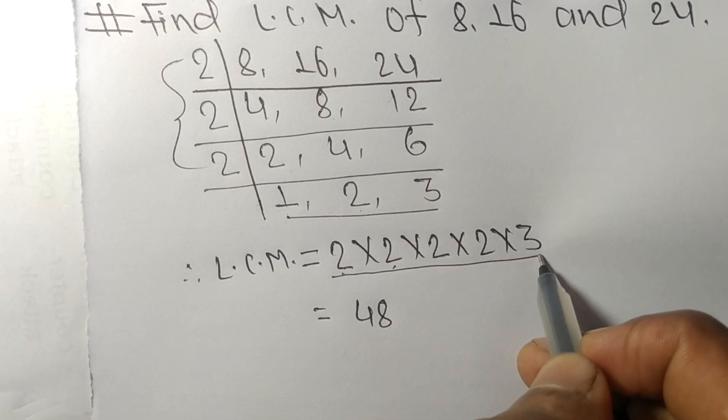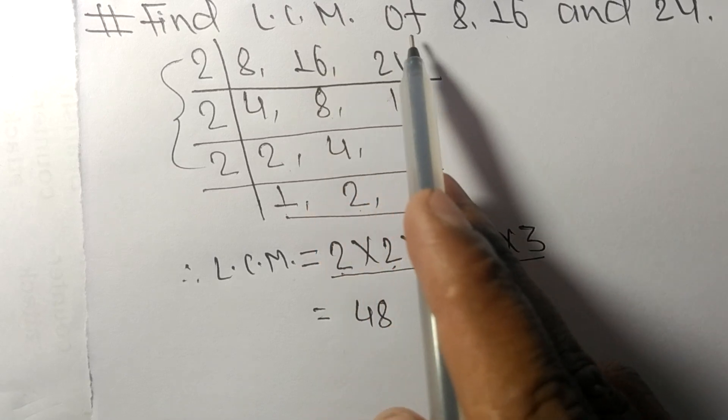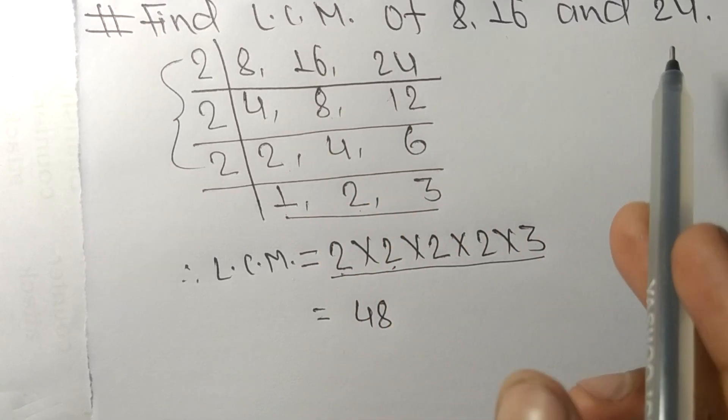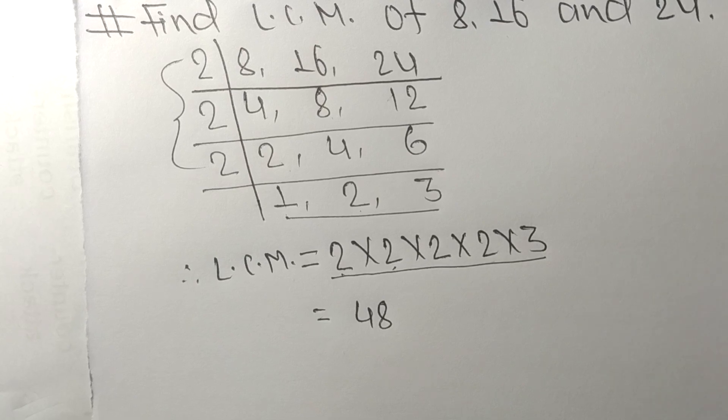So by multiplying all these numbers we got 48. So 48 is the LCM of 8, 16, and 24. So this much for today and thanks for watching.